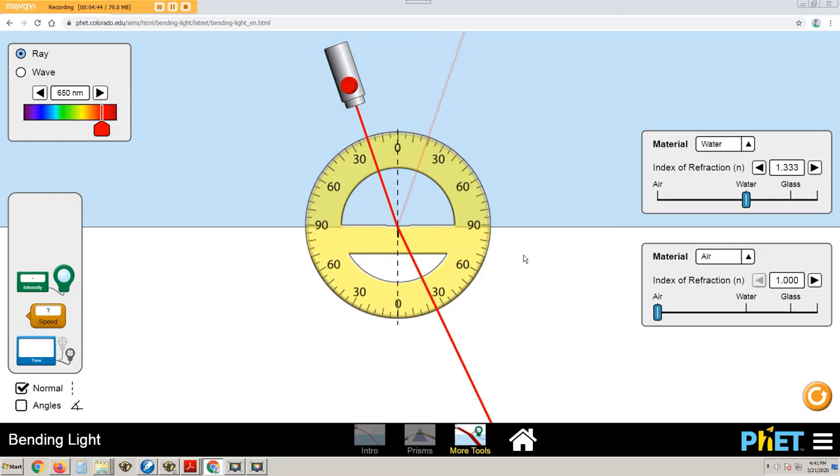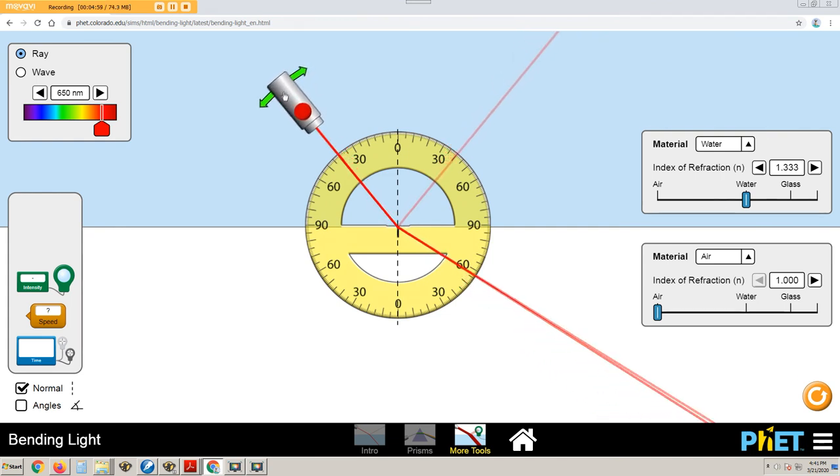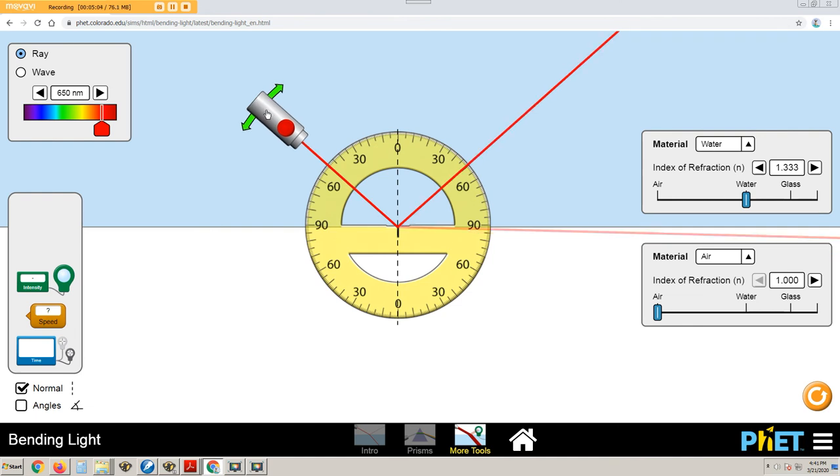To see total internal reflection, we select water as the top material and air as the lower material. Now, as the angle of incidence grows, we see that the angle of refraction grows until it gets near about 90 degrees. After that, total internal reflection occurs, in which the laser beam stays in the upper region of water. None of it moves into the air.